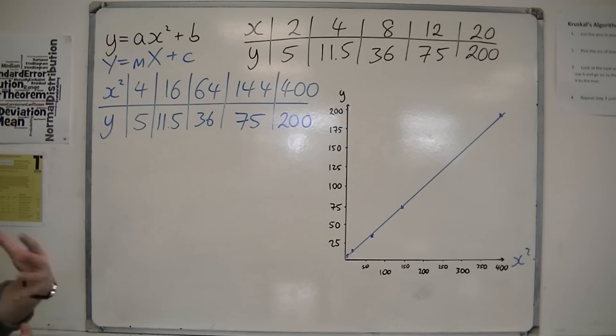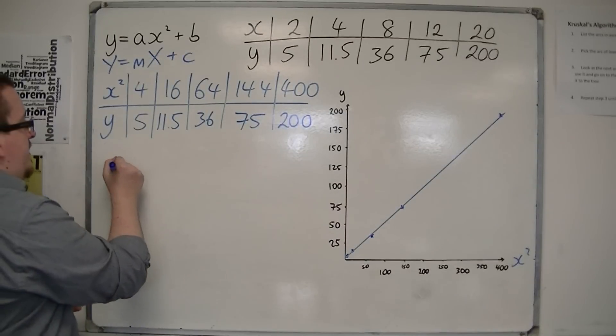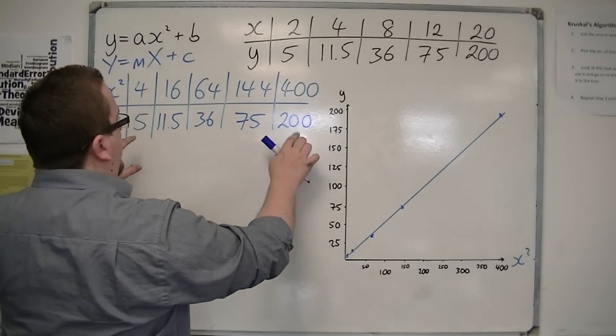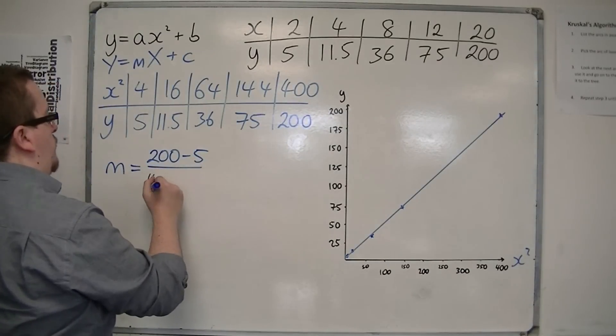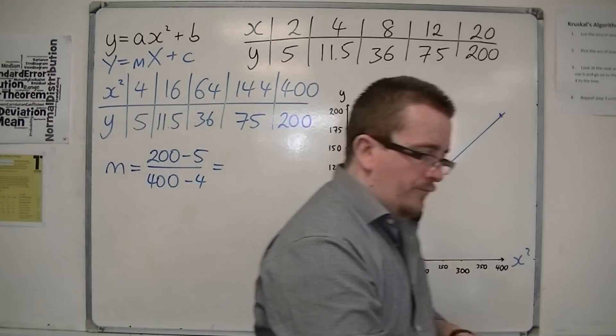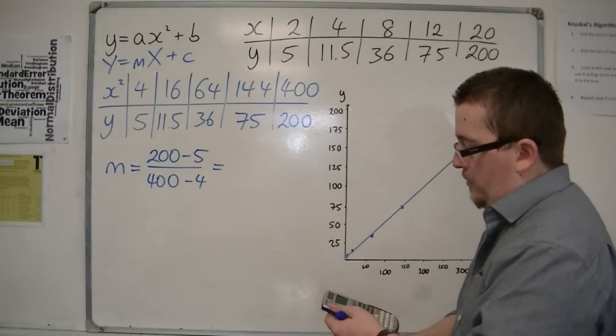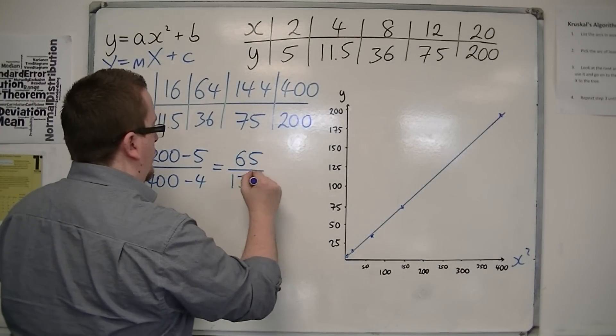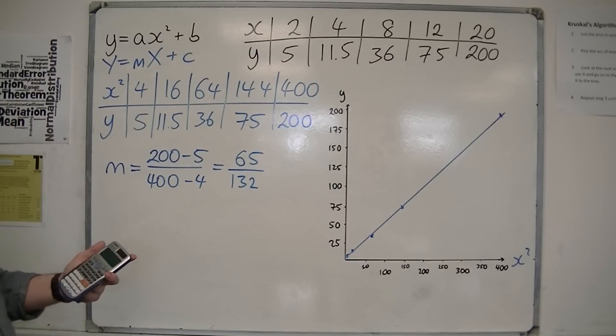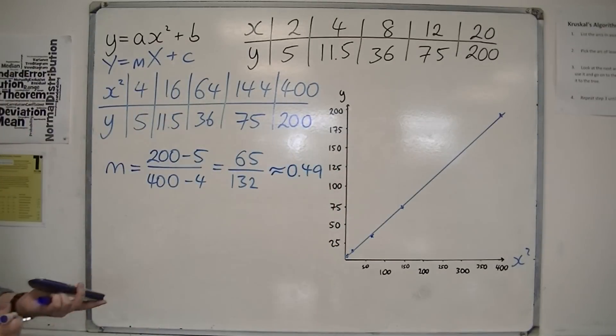So you just need to pick two points that the line goes through. So I'm going to pick the first and the last. So the gradient m is the difference in the y-coordinates, so 200 take away 5, divided by the difference in the x-coordinates, so 400 take away 4. So we've got 200 take away 5, divided by 400 take away 4, and I get 65 over 132, which is 0.4924, etc. So it's approximately 0.49 to two decimal places.